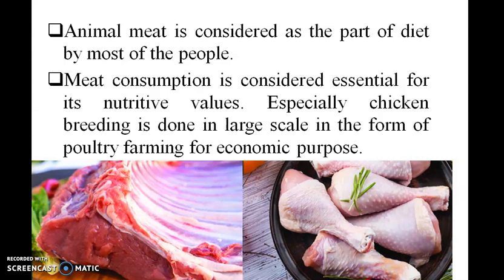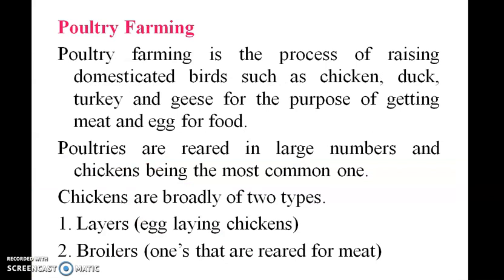Meat consumption is considered essential for its nutrient values. Poultry farming is the process of raising domesticated birds such as chicken, duck, and turkey for the purpose of getting meat and eggs for food. Layers are egg-laying chickens, and broilers are those raised for their meat.